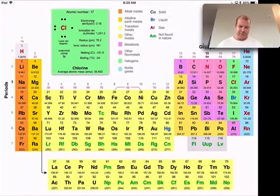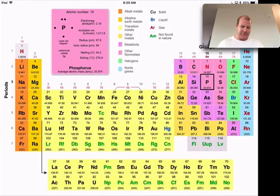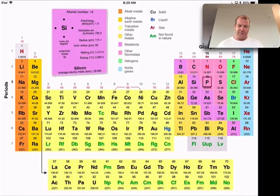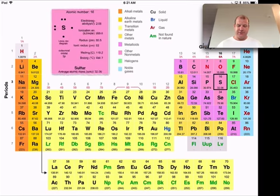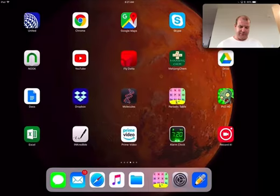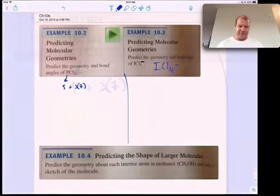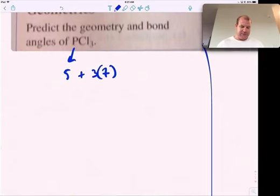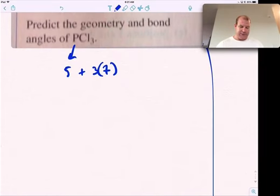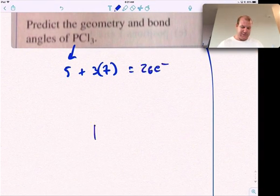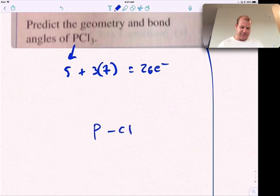So phosphorus here, it's group 5A, that means one, two, three, four, five for phosphorus, six, seven for chlorine. Okay, so that's how I'm counting up the valence electrons. So that's 26, 26 electrons, phosphorus in the center, Cl, Cl, Cl, that's six electrons.